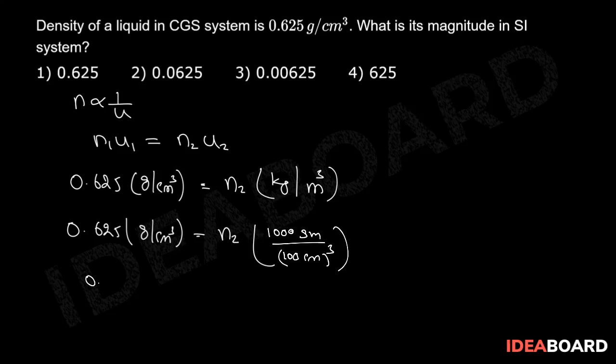Then I can write 0.625 gram per centimeter cube should be equal to N2 into 10 to the power of 3 divided by 10 to the power of 6 gram per centimeter cube.